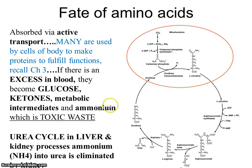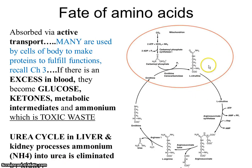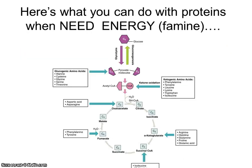Ammonia gets converted to urea through the urea cycle in the liver and kidneys, which processes the ammonium ion into urea and allows for its elimination. There is a lot of chemistry involved here, but the take-home message is that these are all a series of chemical reactions.